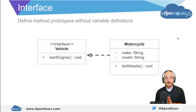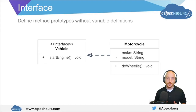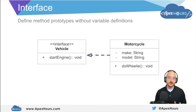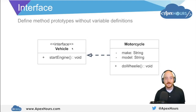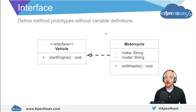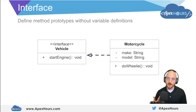An interface defines a method prototype without variable definitions — you specify what the method signature is and leave it to the implementation to define what that actually means. For example, we have the vehicle interface, and all vehicles must implement the start engine method. Motorcycle is a specific type of vehicle that satisfies or implements the vehicle interface for start engine. Whenever we read the word 'implements' — as in motorcycle implements vehicle — we think of that as the word 'does.' A motorcycle does the things that a vehicle does.